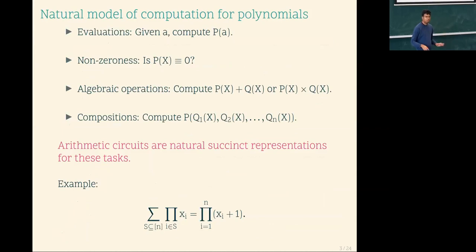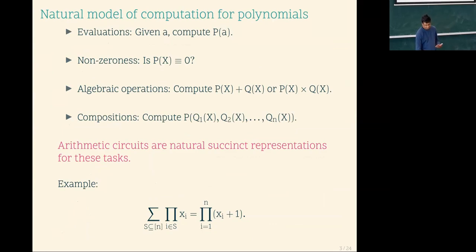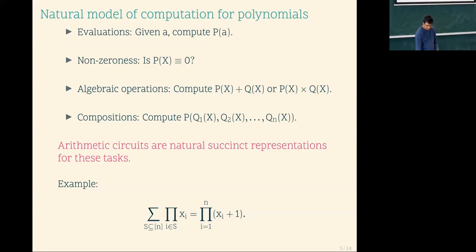Arithmetic circuits are a natural model of representation as well. Given any point, I can evaluate the circuit, which is very natural — you have a flow of computation from the leaves to the root. Non-determinism can be handled in randomized polynomial time, but doing it in deterministic polynomial time is still a very wide open question. You can do algebraic operations: additions, multiplications, compositions. These are natural operations on circuits, and they're also succinct for a lot of operations.